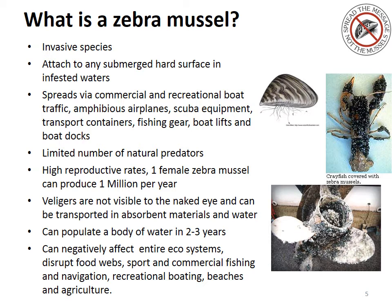They have a limited number of natural predators and very high reproductive rates. One female zebra mussel is able to produce up to one million zebra mussels each year. Up to five weeks of their life cycle, they are called veligers. In this state, they are not visible to the naked eye and can be transported in absorbent materials in standing water.